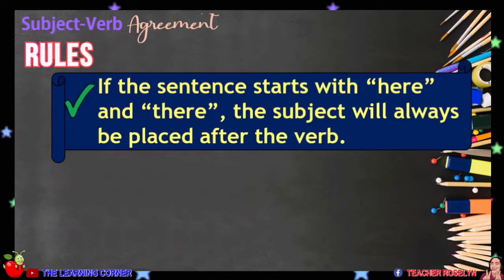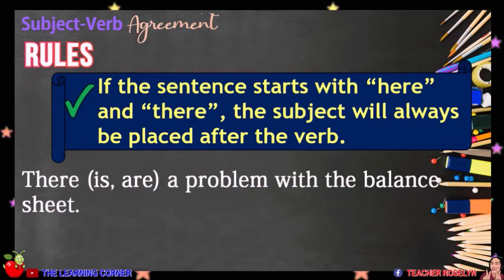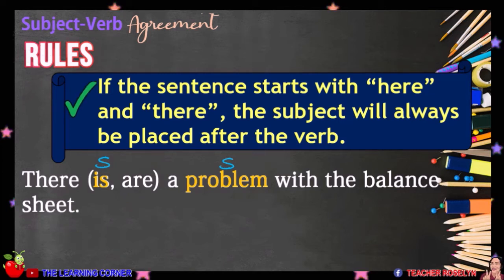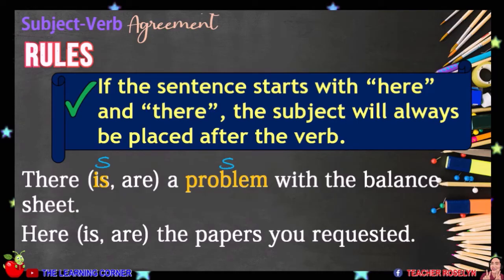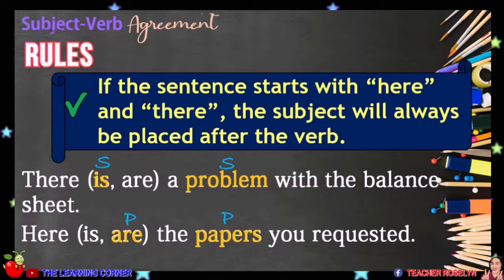If the sentence starts with HERE and THERE, the subject will always be placed after the verb. For example, the subject in this sentence is PROBLEM, so the correct verb is IS. There is a problem with the balance sheet. In this sentence, the subject is PAPERS, which is plural, so we will use the verb ARE. Here are the papers you requested.